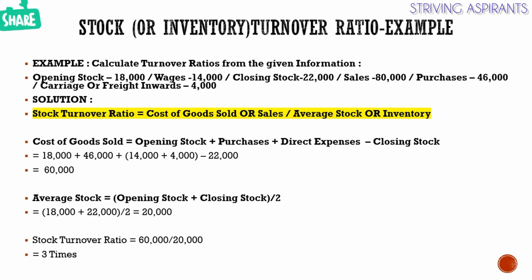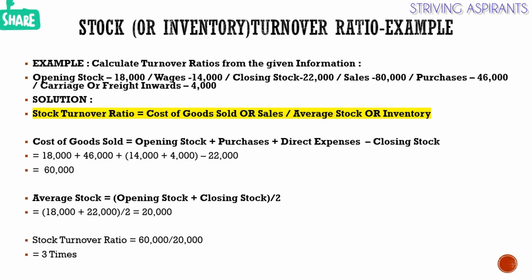Secondly we have to calculate the average stock. The formula is opening stock plus closing stock divided by 2. We have opening stock 18,000 plus closing stock 22,000 divided by two, so the average stock amount is 20,000. Now we get the stock turnover ratio: 60,000 (cost of goods sold) divided by 20,000 (average stock), giving us stock turnover ratio equal to 3 times.